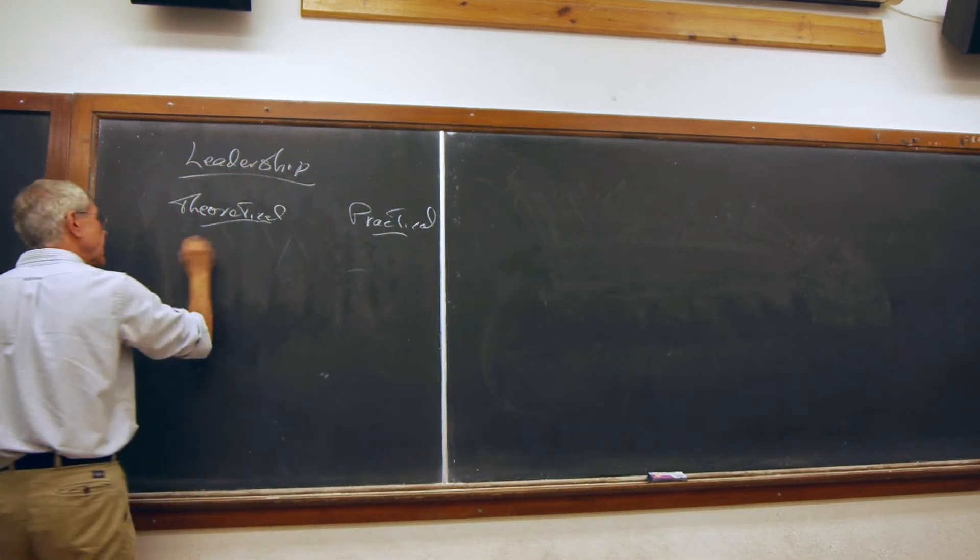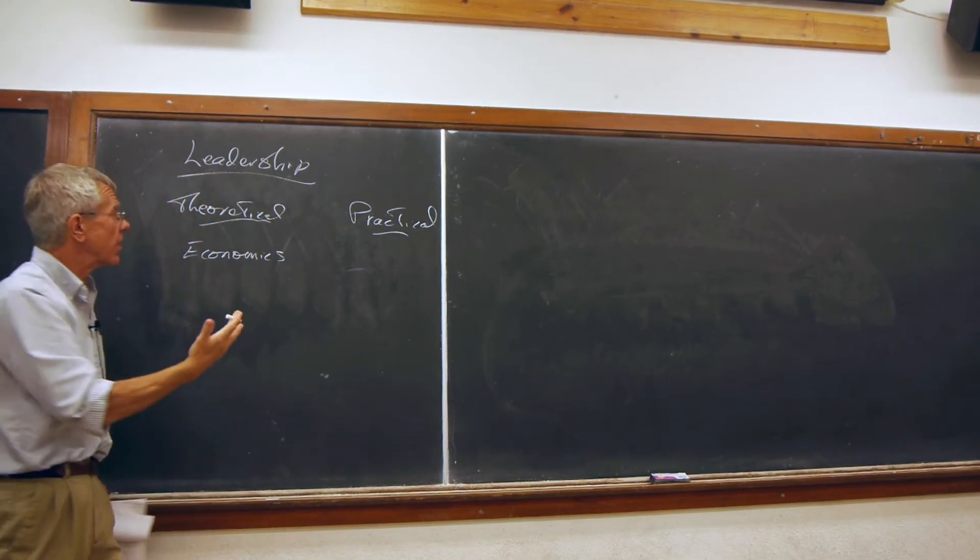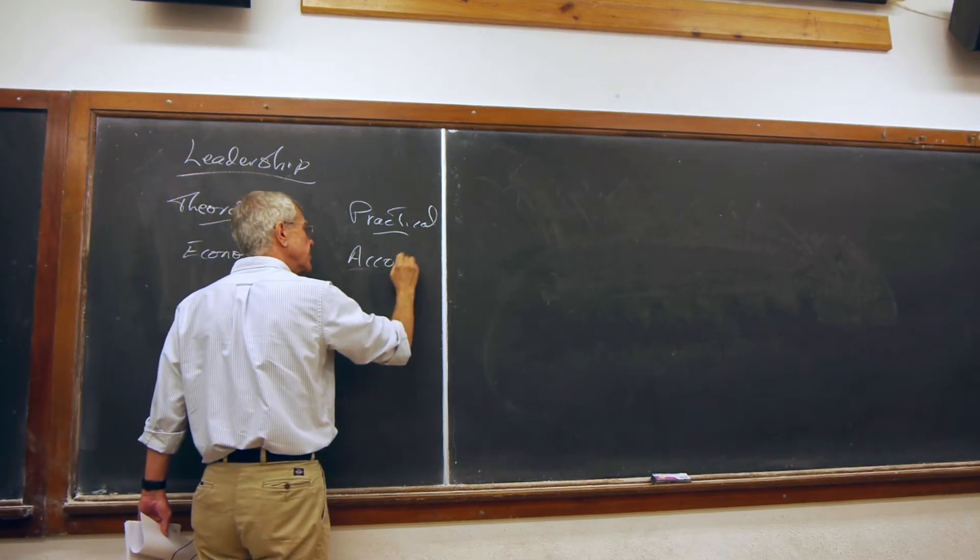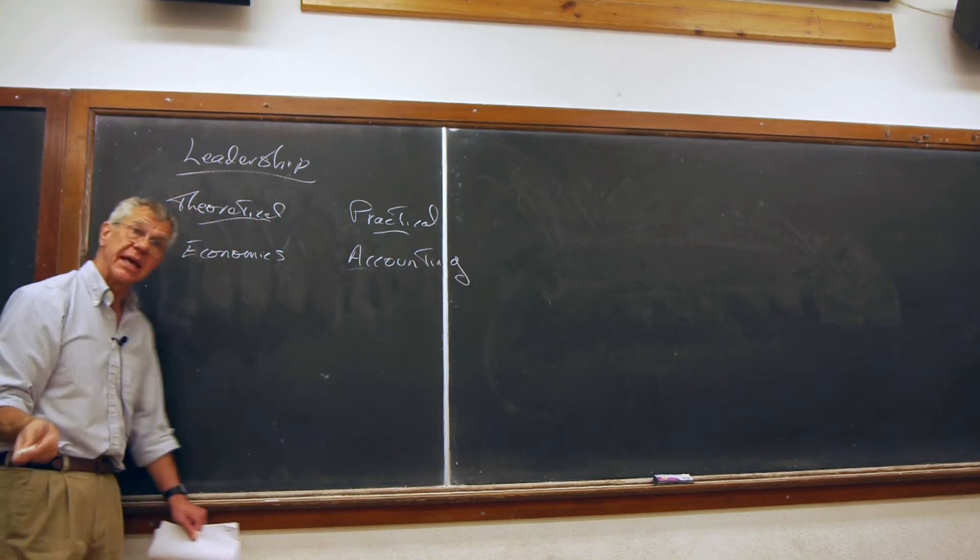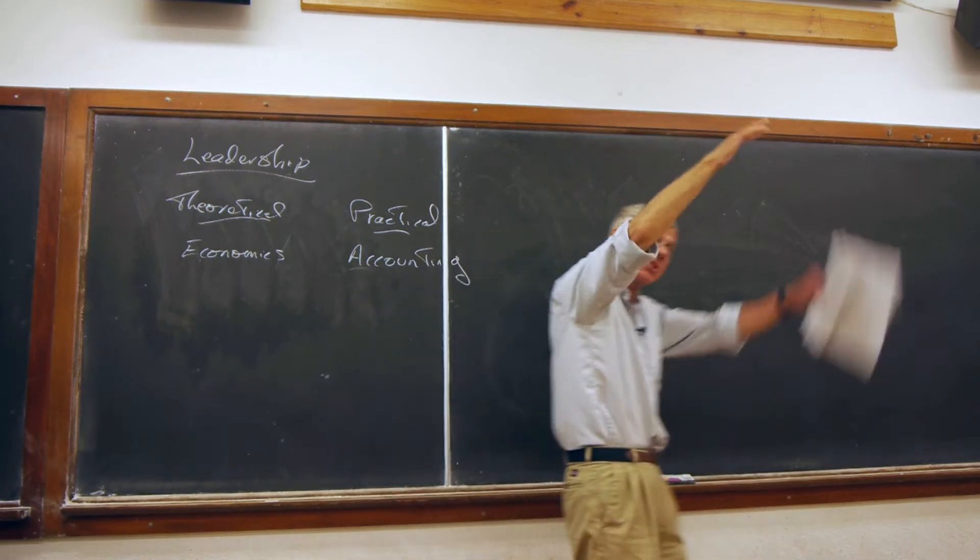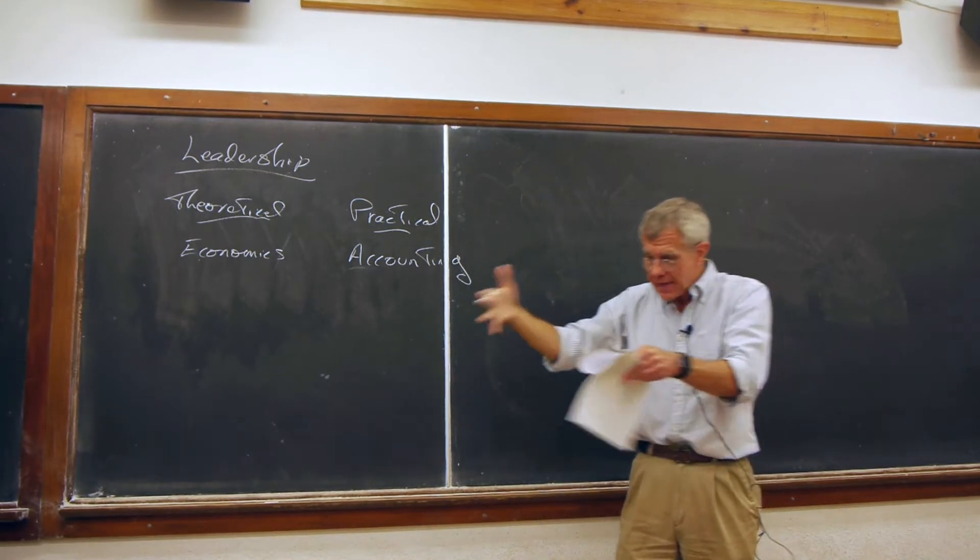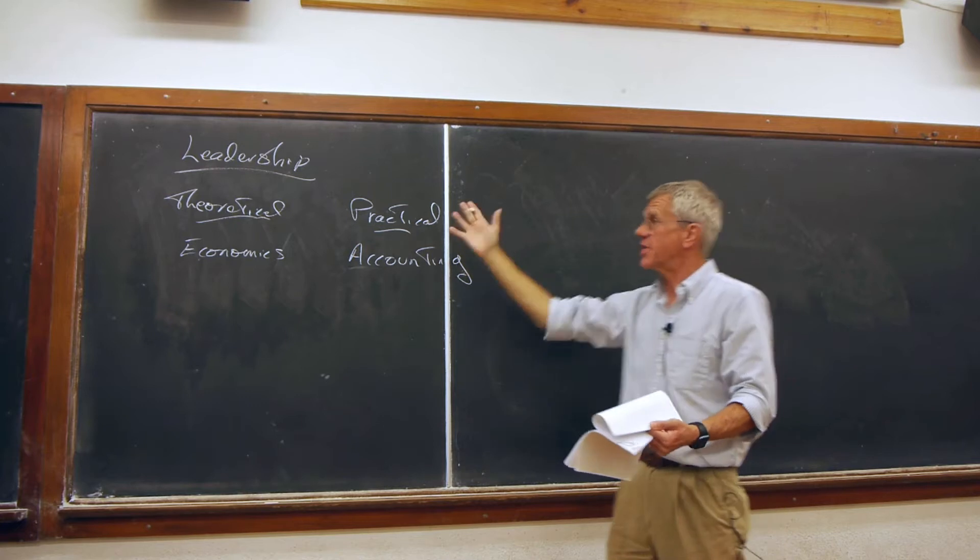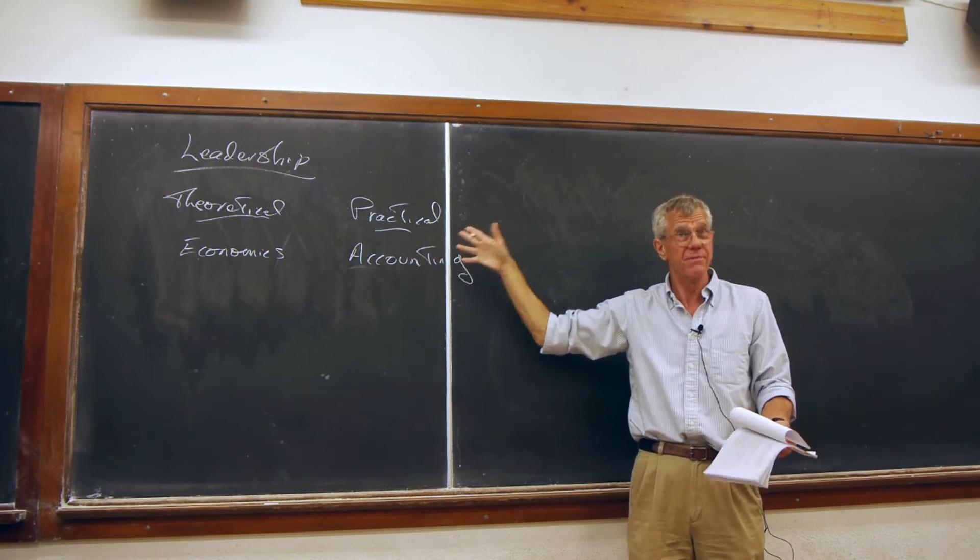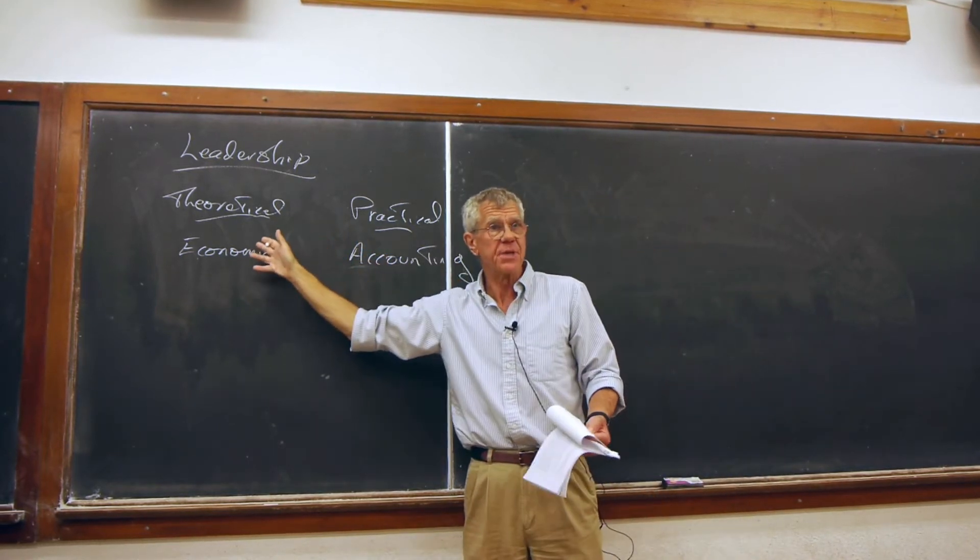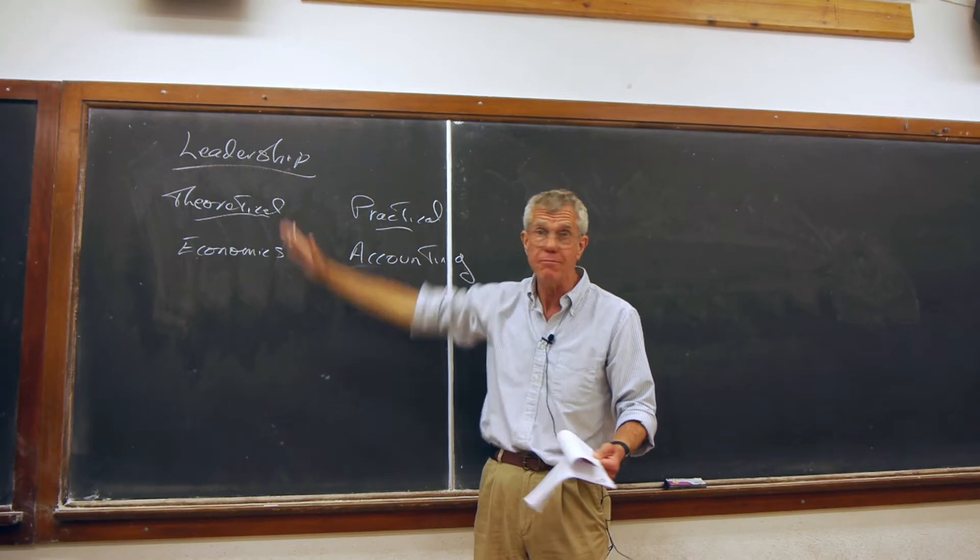Maybe like economics versus accounting. Economics versus accounting is a nice example of things that have a certain relation to one another. Economics is studying the theoretical side of how the economy works. And accounting is a much more practical discipline. That's not to say there aren't theoretical components to accounting, that there aren't practical implications of economics. But economics is really about constructing a theory.